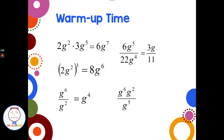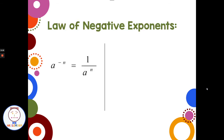This bottom one has a couple different rules all wrapped into one problem. I'd first start with simplifying the numerator: g to the sixth times g squared — multiplying with the same base, we add and get g to the eighth. Then g to the eighth divided by g to the fifth — dividing with the same base, we subtract the exponent and get g to the third.